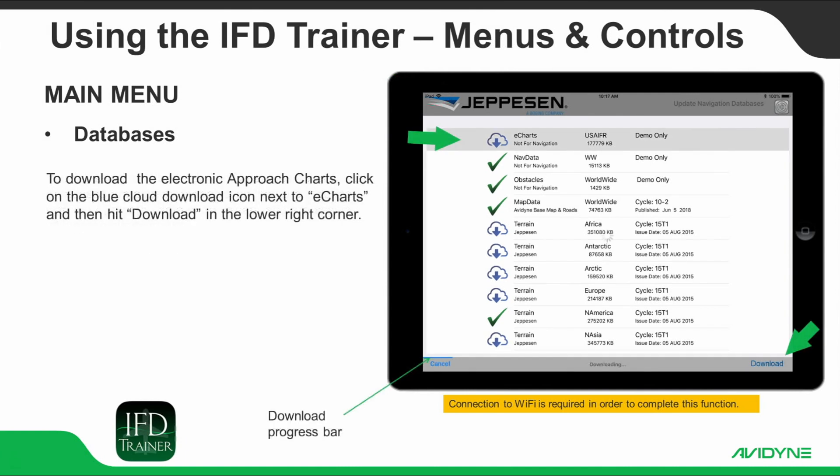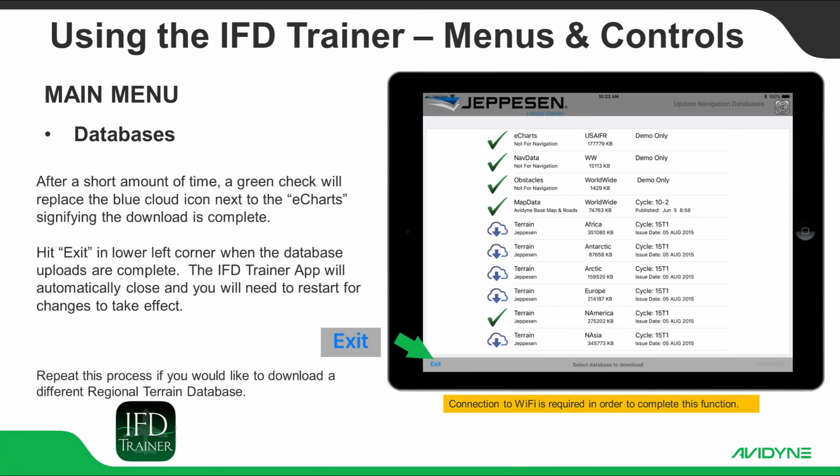To download the Electronic Approach Charts, click on the blue cloud download icon next to Charts and then hit Download in the lower right corner. A progress bar along the bottom of the screen monitors download progress. After a short amount of time, a green check will replace the blue cloud icon next to the charts, signifying the download is complete. Hit Exit in the lower left corner when the database uploads are complete.